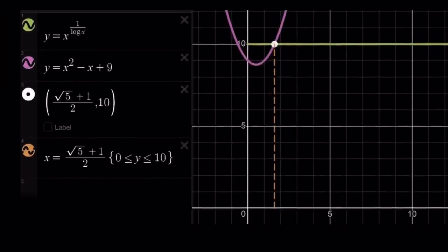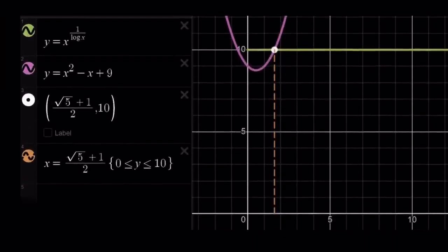Let me go ahead and show you the graph real quick. This is the graph of y equals x to the power 1 over log x, which is a horizontal line with x positive. And the second one, the purple, the pink one, is a parabola, which intersects the horizontal line at one point because our line is kind of like a half line. And then, the intersection point, you can see root 5 plus 1 over 2 comma 10.